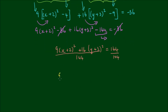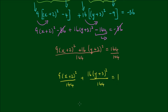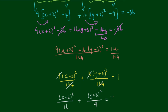Dividing through by 144, the equation becomes 9 times x plus 2 all squared over 144, plus 16 times y plus 3 all squared over 144, equals 1. The 9 and 144 cancel down to 16, giving x plus 2 all squared over 16, and the 16 and 144 cancel down to 9, giving y plus 3 all squared over 9, equals 1.